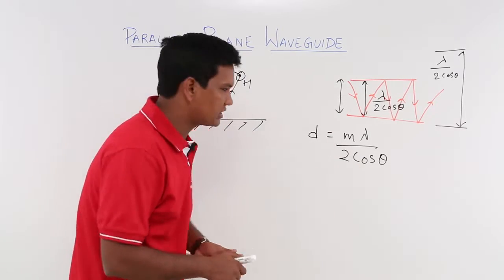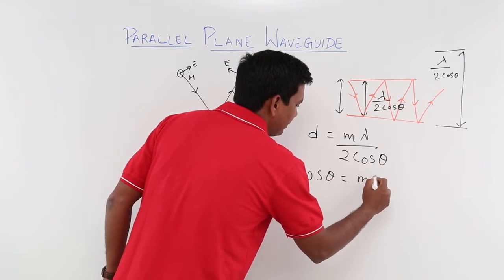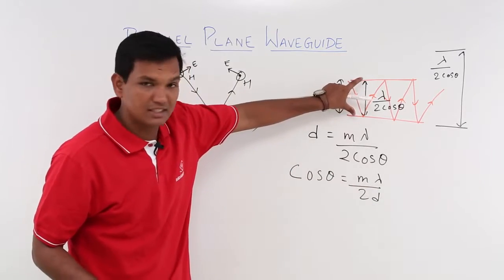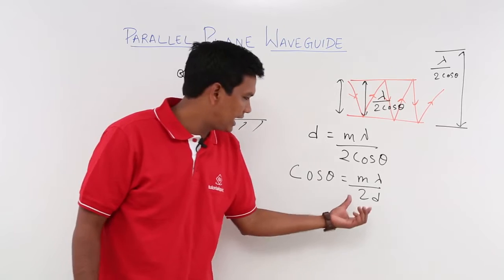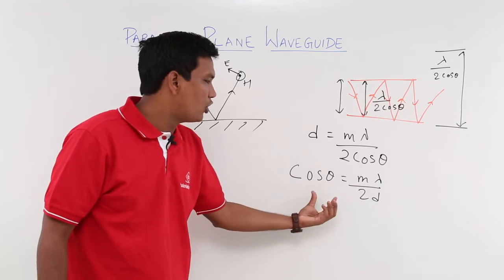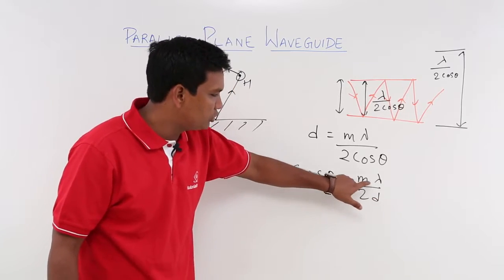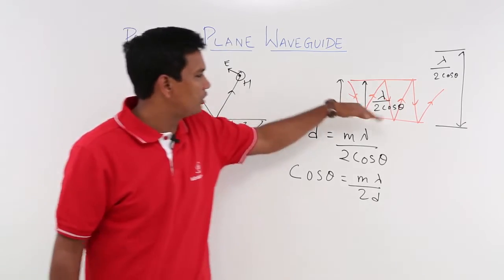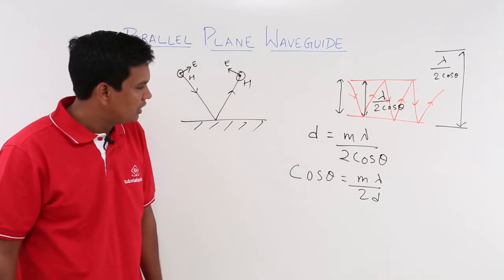If I twist the equation — making cosθ = m·λ/(2d) — then for a fixed distance d, for m equal to 1, I will have one launching angle. What I am saying is: if I fix the distance between the plates, then for certain values of m, you will have certain launching angles. If d is fixed and you change m, you will have specific launching angles at which the wave will propagate along the waveguide without losing any energy.